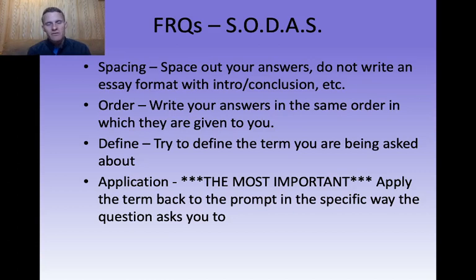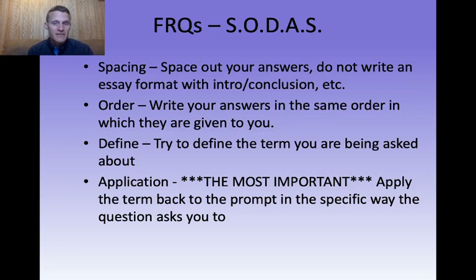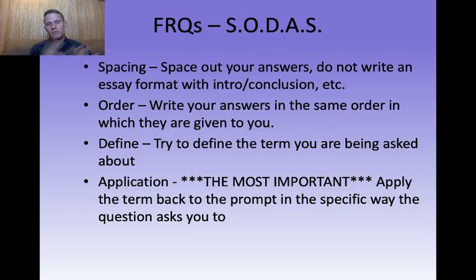Just for a little review: the independent variable is the one the researcher is manipulating. The dependent variable is the one they are measuring — the one they have no control of — but they want to see how it's going to change in relation to how they change the independent variable. There's going to be a lot of application in this format this year because you guys are going to have so much information at your fingertips, and they're going to want to make sure you can apply that information correctly. Application, no doubt, by a mile, is going to be the most important thing.